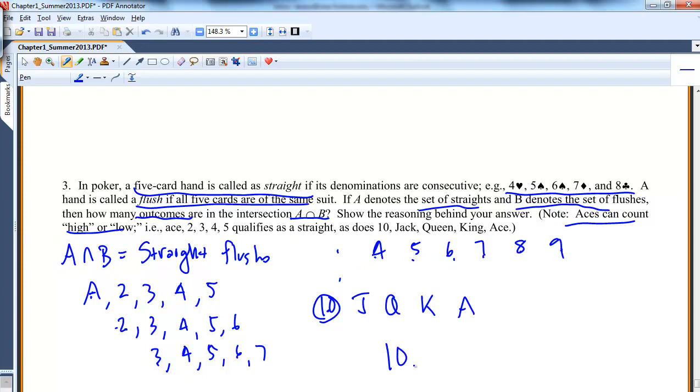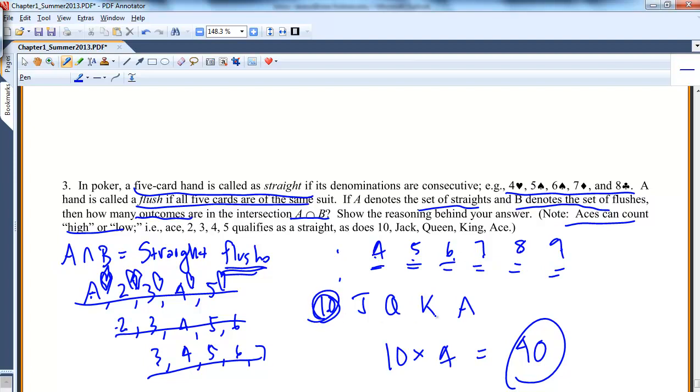10 straights, but to be a flush, these all have to be all hearts or all diamonds. There's 4 different suits, so I'm going to multiply this by 4. So there's 40 straight flushes that are possible. I was saying, starting with an ace, starting with a 2, starting with a 3, and so on - there's one starting with a 4, another starting with a 5, another starting with a 6, 7, 8, 9, and 10 is my last one. That's how I got the 10.